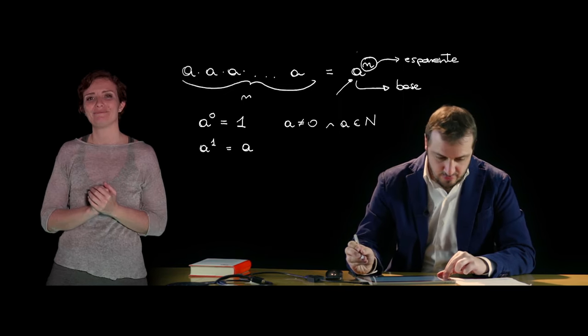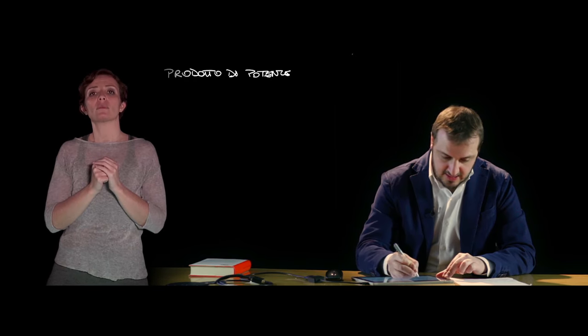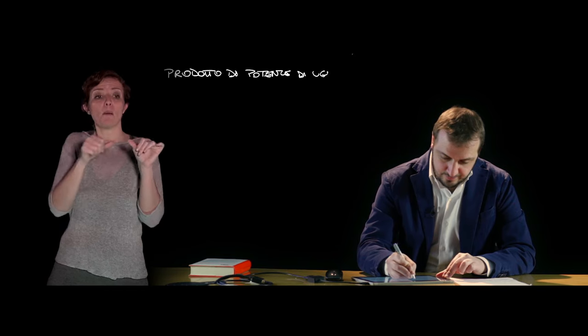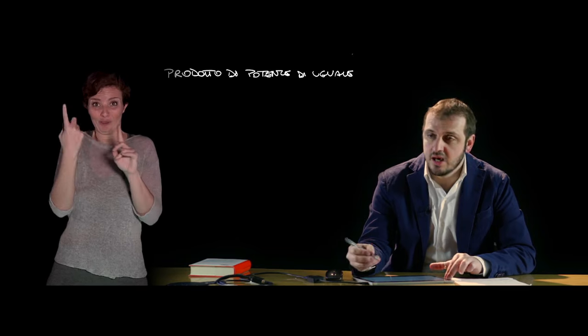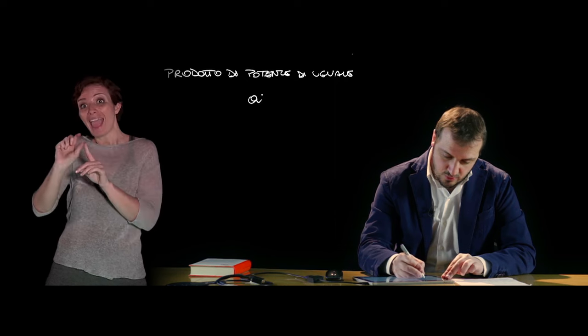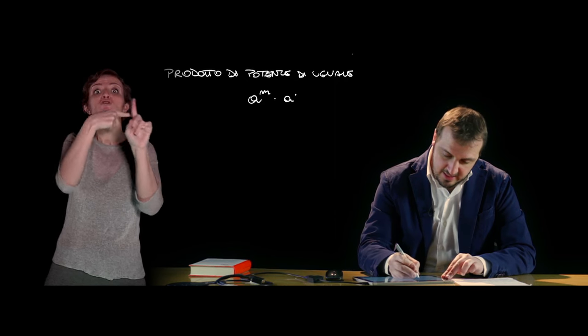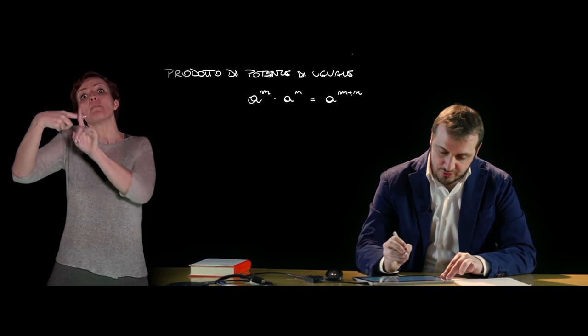Le principali proprietà delle potenze vanno a descrivere alcune operazioni che è possibile fare tra le potenze. La prima fondamentale operazione è quella del prodotto di potenze caratterizzate dalla stessa base. Il prodotto di potenze caratterizzate dalla stessa base è una potenza che ha per base la stessa base e per esponente la somma degli esponenti, per cui A alla m per A alla n sarà uguale ad A alla m più n.